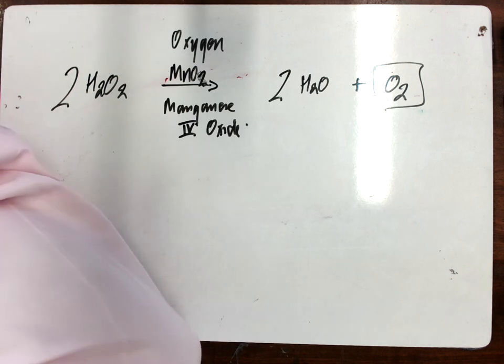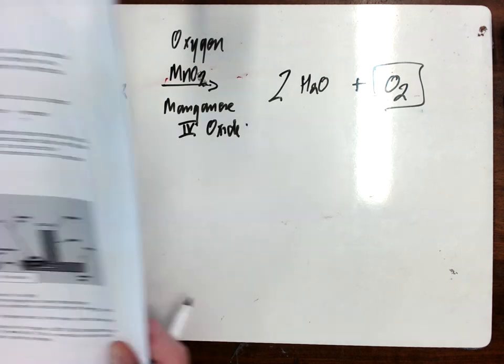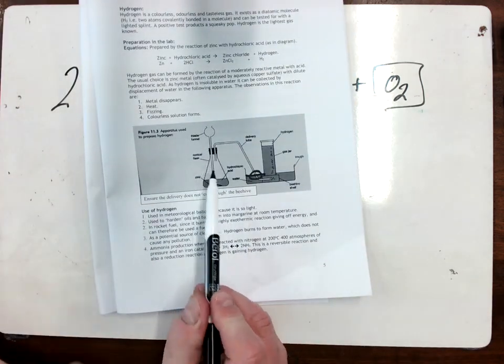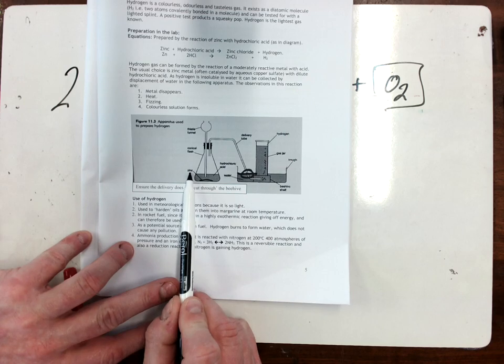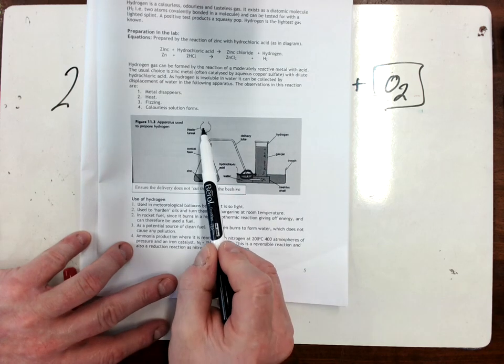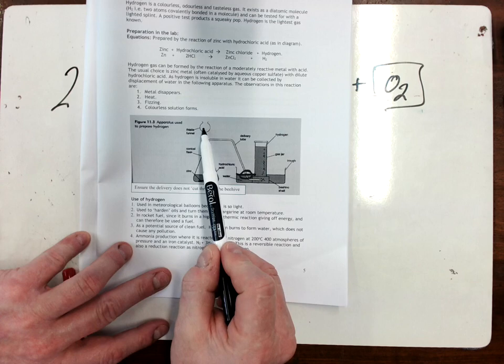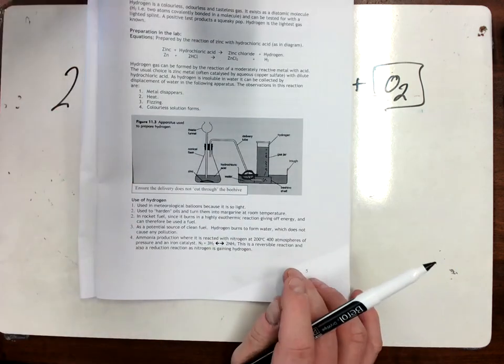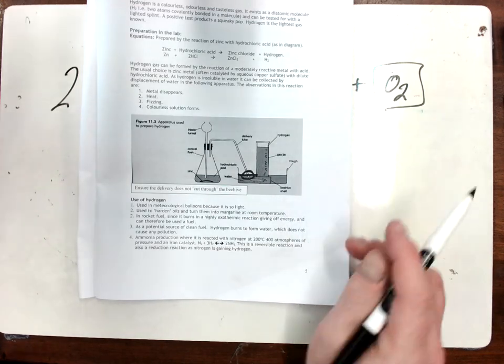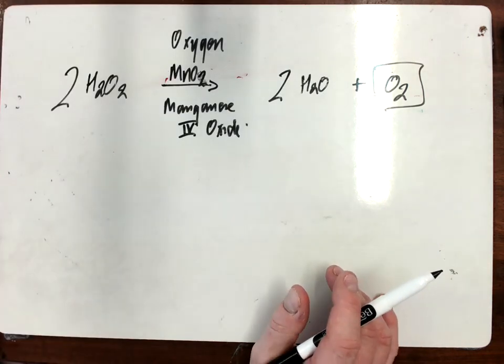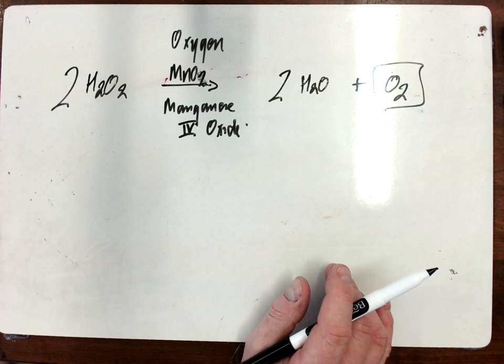That is how you would carry out that reaction to get your oxygen. You do exactly the same apparatus as we did earlier with hydrogen. The only difference is this time instead of having zinc you will have manganese oxide as your catalyst, and up here instead of acid you will add hydrogen peroxide. You'll collect oxygen instead of hydrogen, but everything else is identical in that experiment.